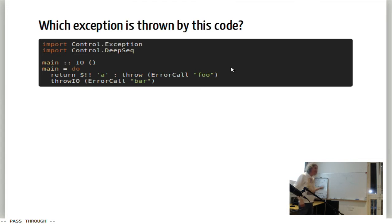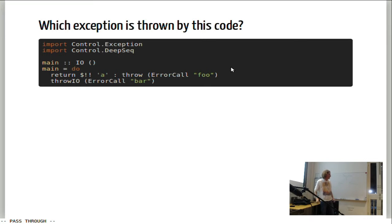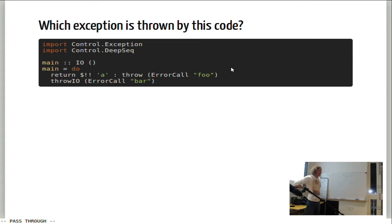Here's another example that can actually be demonstrated. Does everybody know what `$!!` (dollar-bang-bang) does? It's basically from NFData — it's a version of the dollar operator that deeply evaluates the value. There's a string that starts with 'A' and after that is an exception. The head is defined but the tail is not. So `$!!` forces the string deeply, then returns it. After that we just throw another exception. Which exception would we expect here?